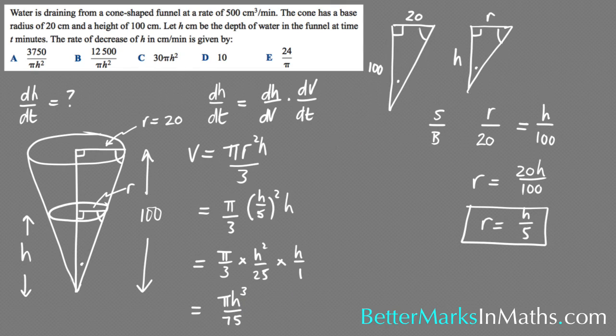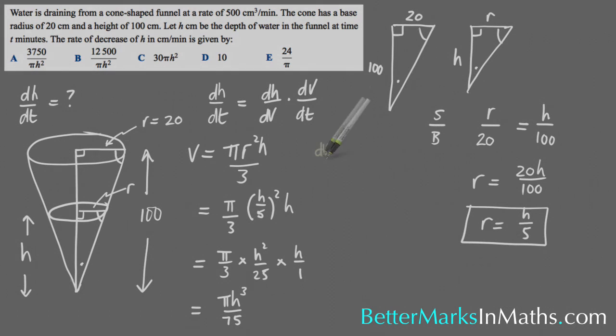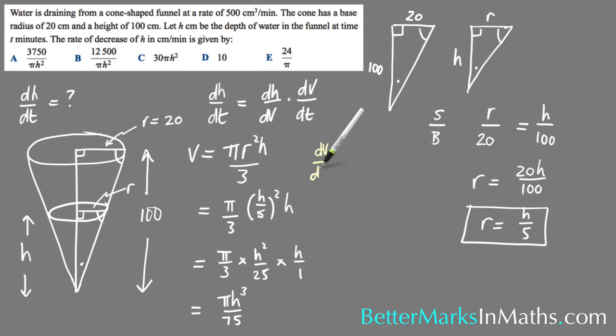So next, dV/dh is going to be equal to finding the derivative of that. So dV/dh: bring down the power, and then πh, and then decrease that power by 1, and that will become 2 over 75. And then 3 into 75 goes 25 times, so that's πh²/25.